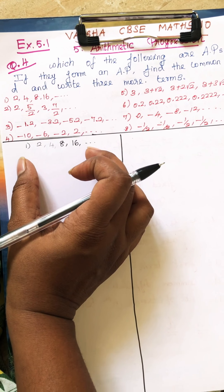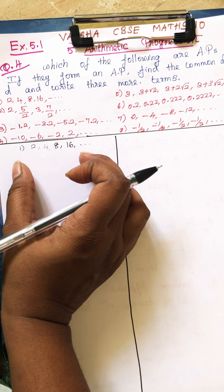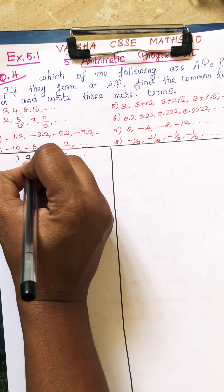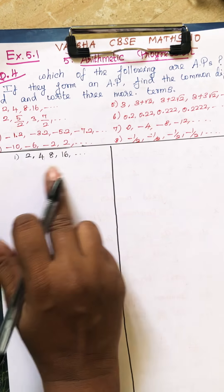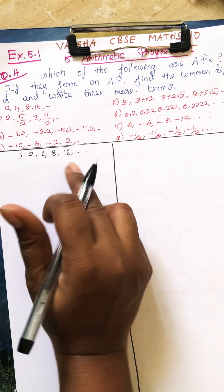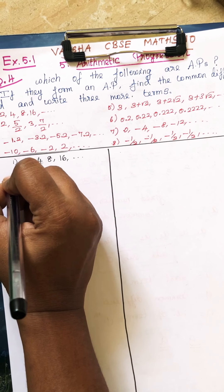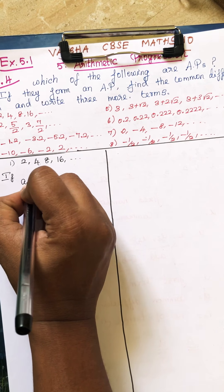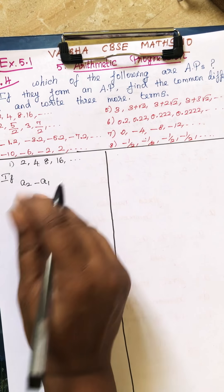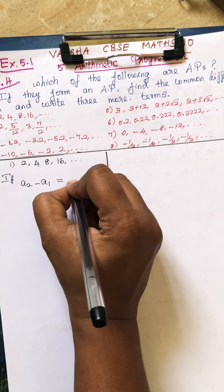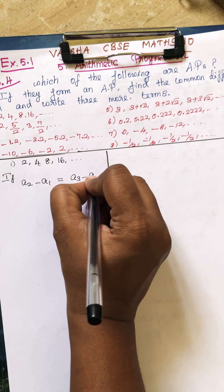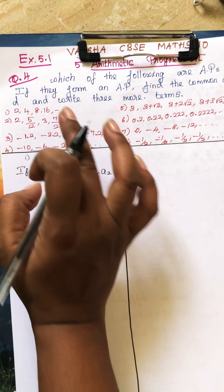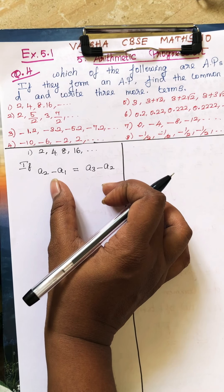What is the condition for AP? Whether it is an AP is determined by whether it is added by a fixed number. The condition is: if second term minus first term equals third term minus second term, then you can say it forms an AP.